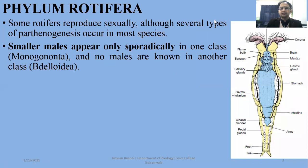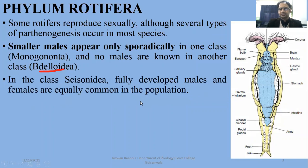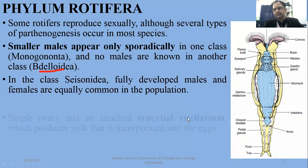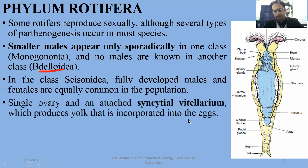No males are known in class Bdelloidea. In the Bdelloidea class you don't have any males. Seisonidea is a smaller class with one genus and two species where fully developed males and females are equally common in the population, with a single ovary and an unattached syncytial vitellarium.